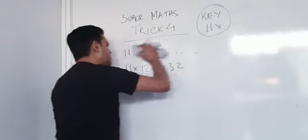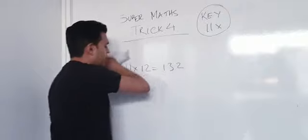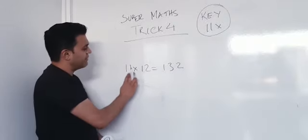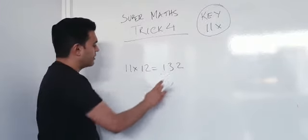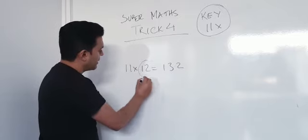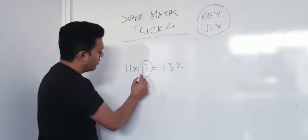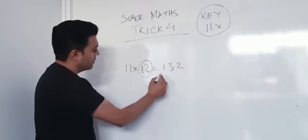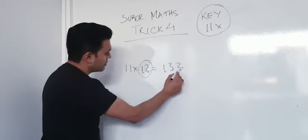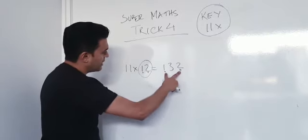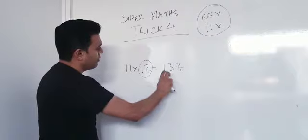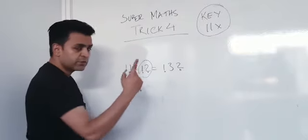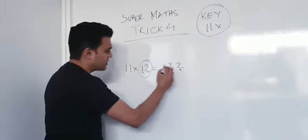Now, I'm going to rub these two off and concentrate on this number here. 11 times 12, 132. Look at this figure here, 12. Look at the 1 and look at the 2. These two numbers are now here. 1 and 2, 1 plus 2 is 3, which is that number there.